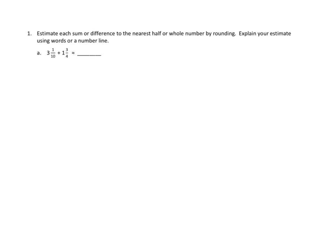Let's take a look at a few problems tonight that involve estimation. Problem number one asks us to estimate each sum or difference to the nearest half or whole number by rounding. Explain your estimate using words or a number line. And then the first problem we've got in 1a is 3 and 1 tenths plus 1 and 3 fourths. So we're going to nearest half or whole number. So I'm going to say that 3 and 1 tenths is roughly 3. 1 tenths we know is a very small fraction, so it's just a little bit over 3.